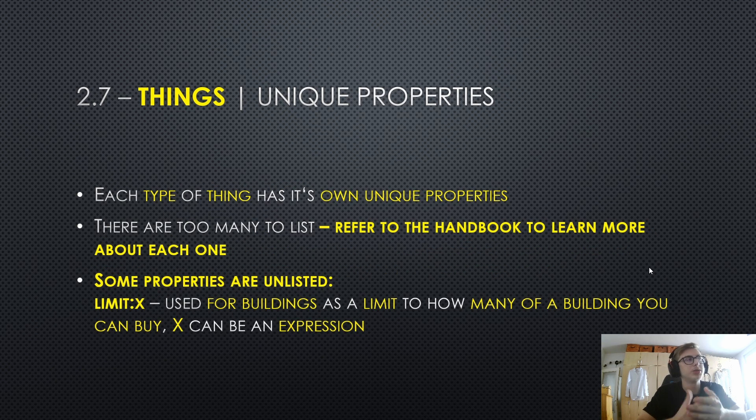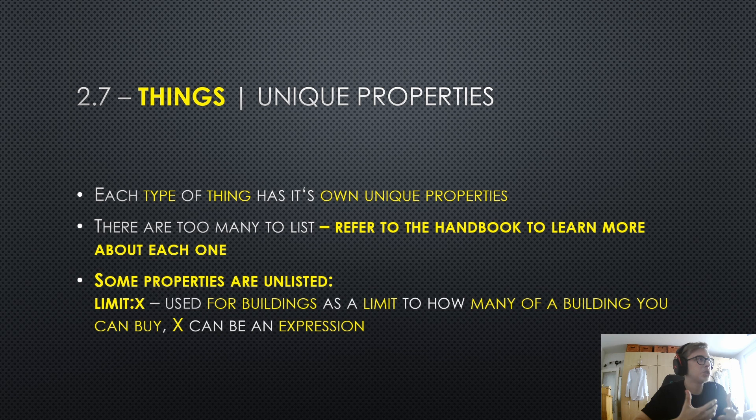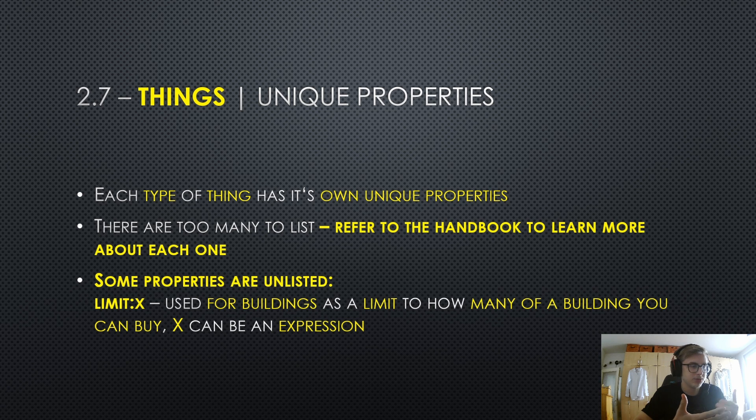Unique properties were also mentioned in the last video. Basically, each type of thing has its own unique properties. For example, buildings have their own unique properties. Upgrades have their own unique properties. Buttons have their own unique properties.